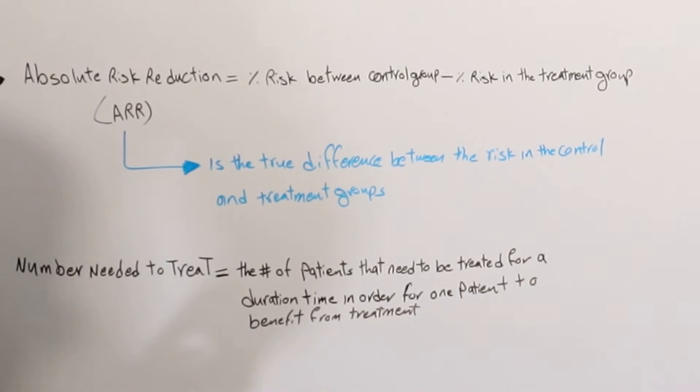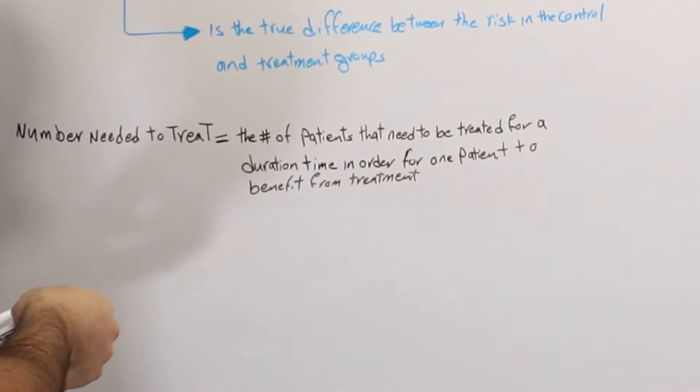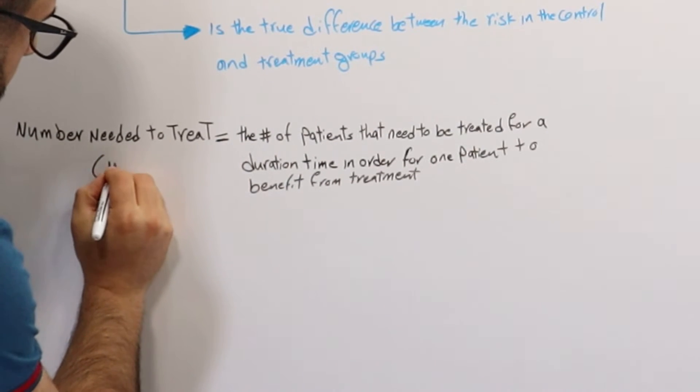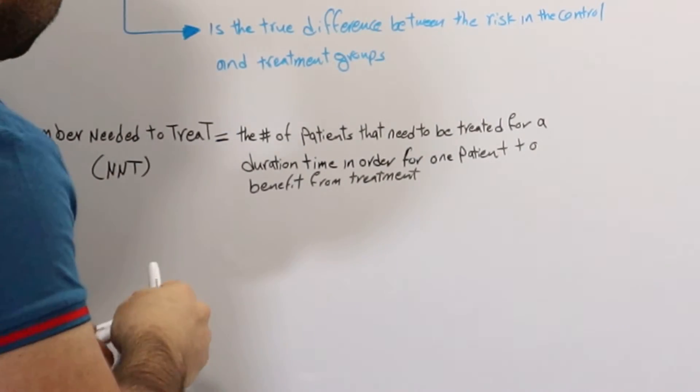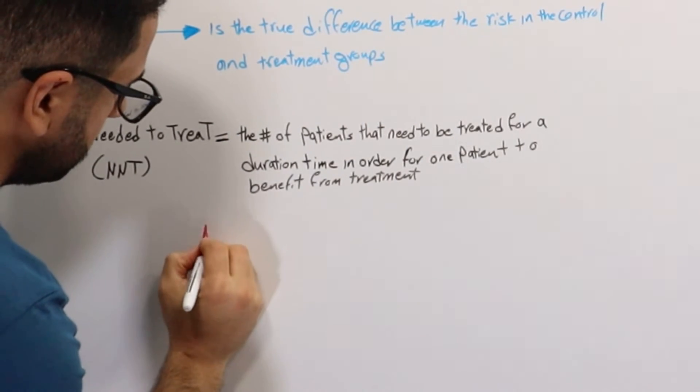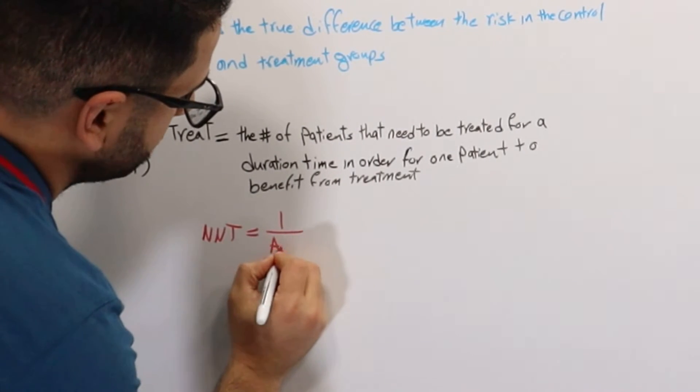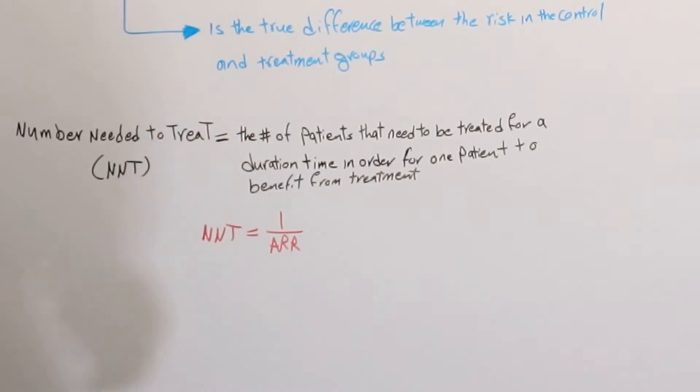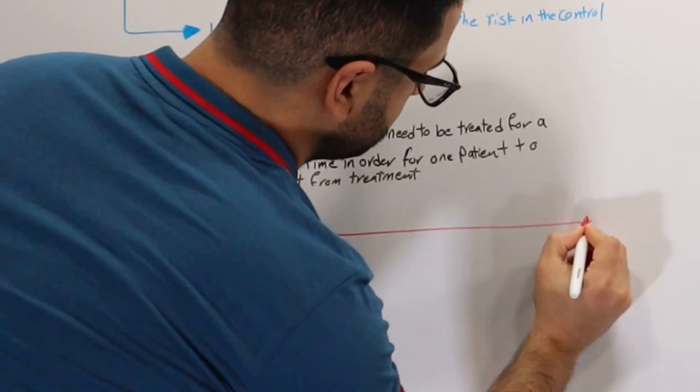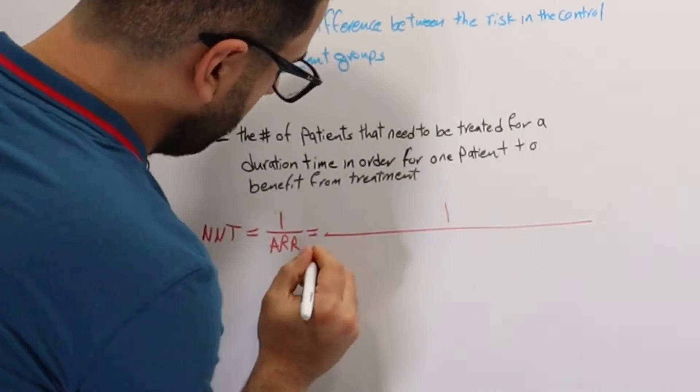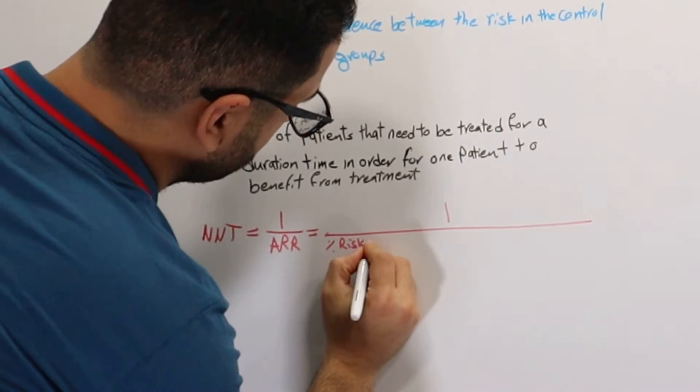And the formula for number needed to treat is, so I am going to refer to number needed to treat as NNT. So NNT is 1 over absolute risk reduction. And absolute risk reduction is basically, in other words, the risk in the control group minus the risk in the treatment group.